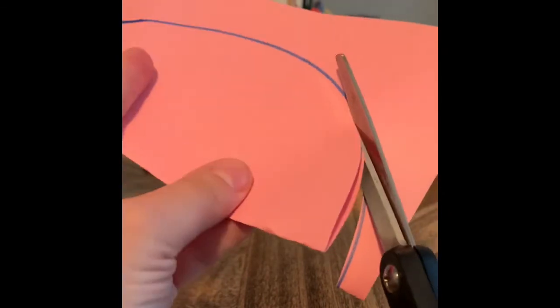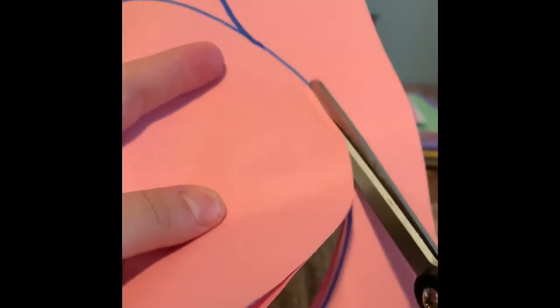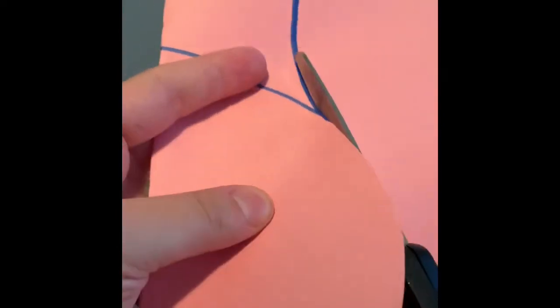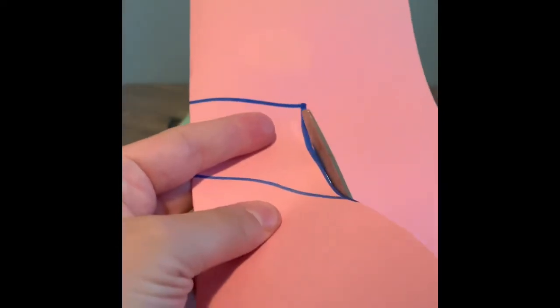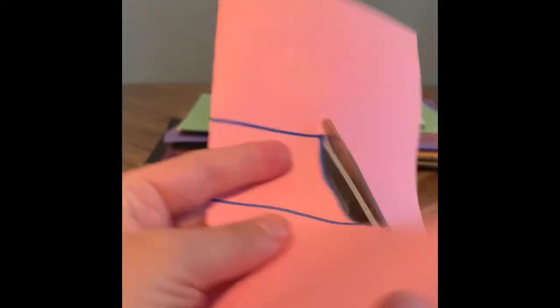The next step is to cut out the shape that you just made. Cut along the line so that you have a circular top with a squared bottom.